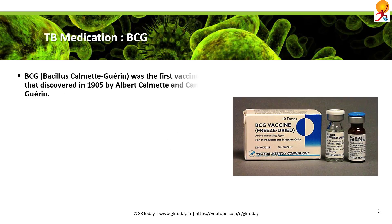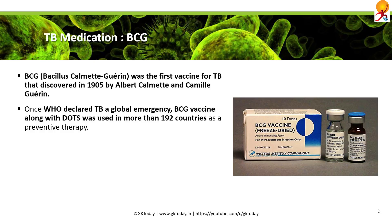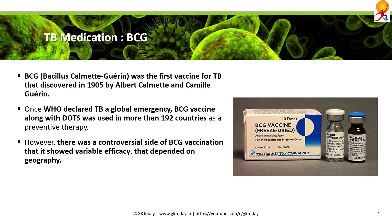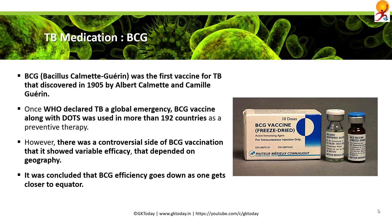Regarding TB medication: BCG (Bacillus Calmette-Guérin) was the first vaccine for TB, discovered in 1905 by Albert Calmette and Camille Guérin. Once TB was declared a global emergency, the BCG vaccine along with DOTS was used in more than 192 countries as preventive therapy. However, there was a controversial finding that showed variable efficacy depending upon geography — BCG efficiency was found to decrease as one gets closer to the equator.